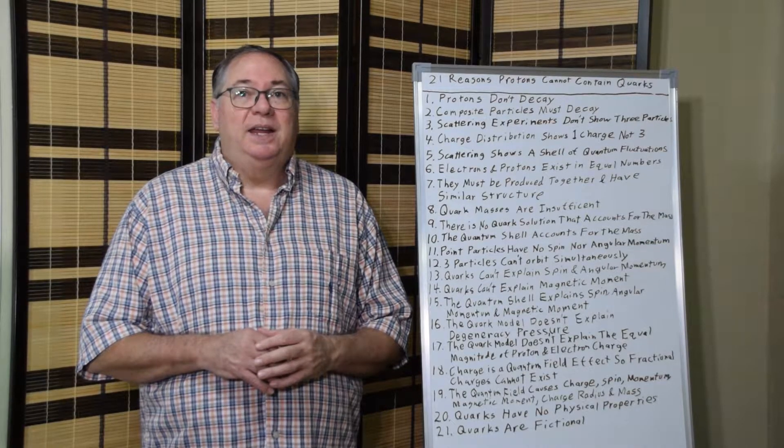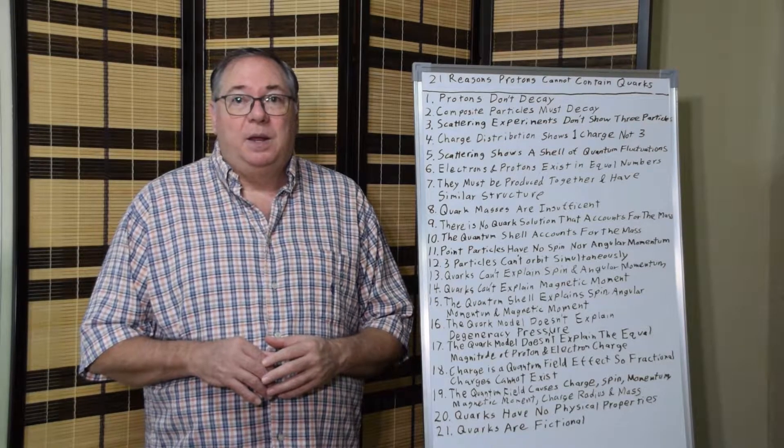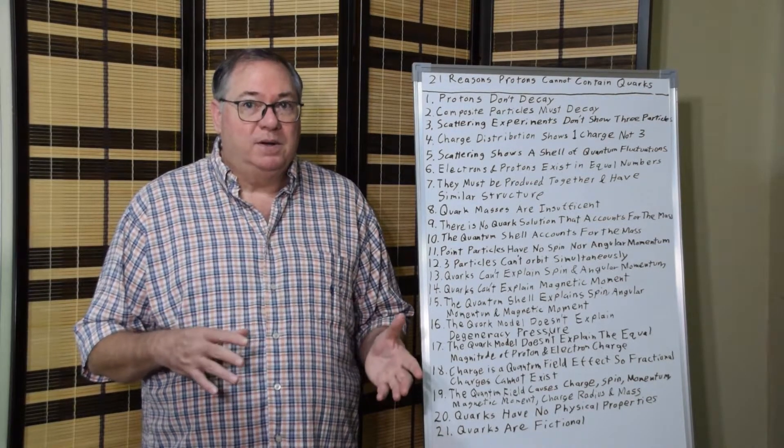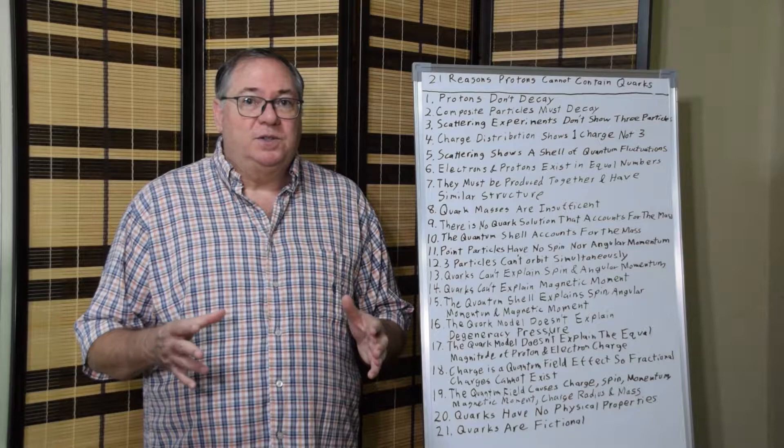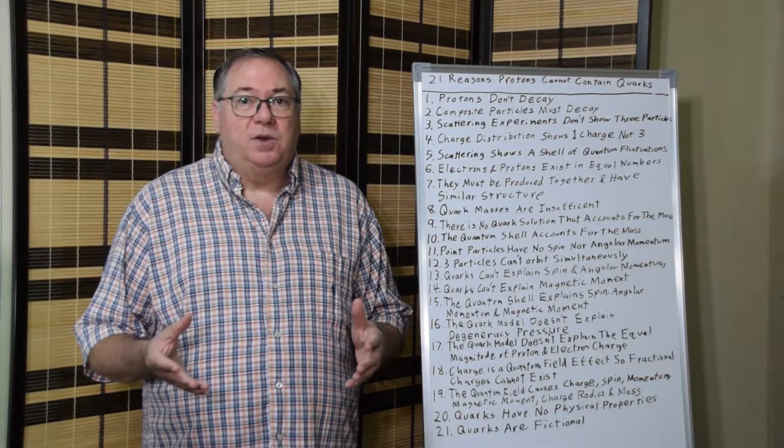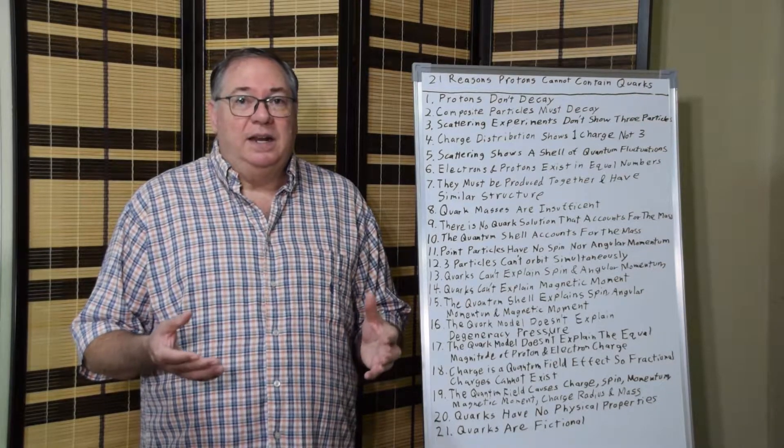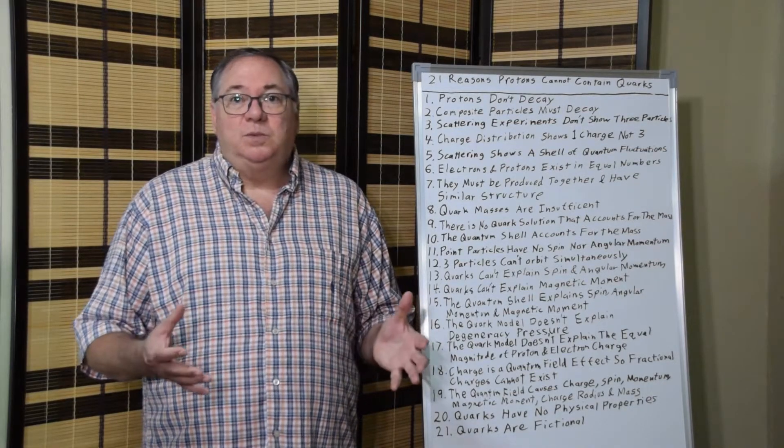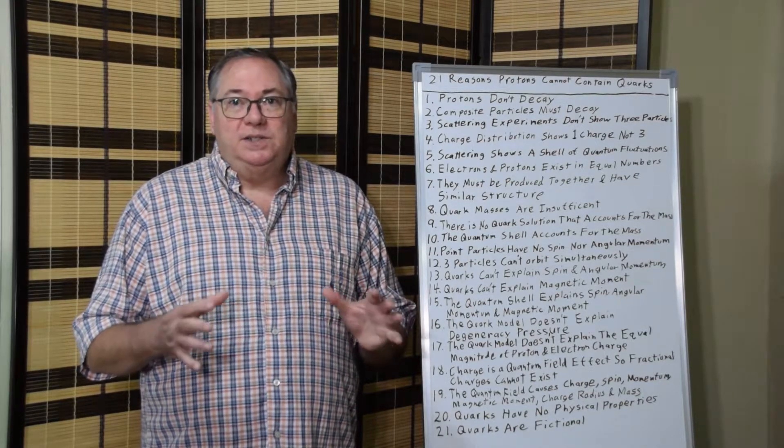Protons don't decay, which leads to number two: composite particles must decay. Basically any time you try to make a composite particle made of other charged particles, it's impossible to come up with a physical structure that is going to be permanently stable. In order to have a permanent structure, at least part of the structure has to be a permanent particle. Even if it has some quantum field structure around it, that's quantum fluctuations in motion.